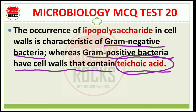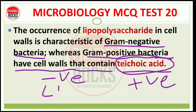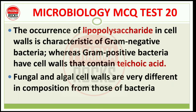यह खास difference याद रखना है: gram-negative bacteria की cell wall बनी है lipopolysaccharide की, और gram-positive की cell wall बनी है teichoic acid से. Fungal and algal cell walls are very different in composition from those of bacteria. Bacteria का main major classification दो तरह का है: gram-positive और gram-negative. Bacteria with LPS (lipopolysaccharide) and bacteria without LPS — with thick peptidoglycan.